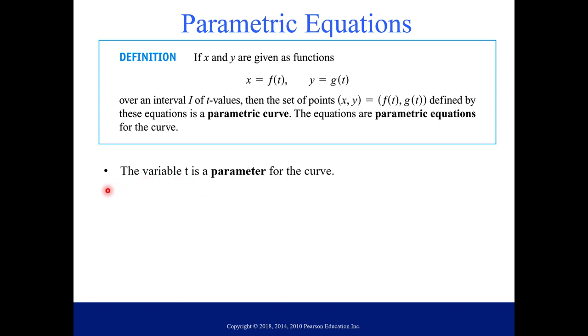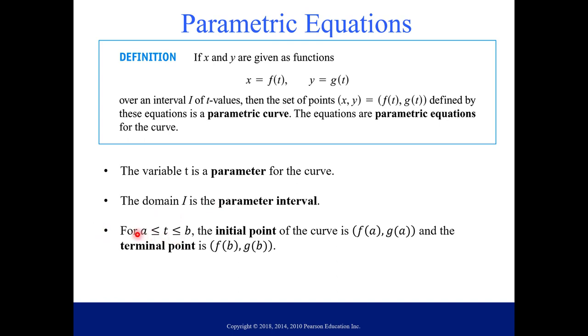Let me give you some details about our definition. First, the variable t is a parameter for the curve. One way you can think about t is time is a possibility for t. The domain i is called the parameter interval. For t between a and b, the initial point on your curve is when you plug in a for t. The terminal point on your curve is when you plug in b for t. Parametric equations and the parameter interval together make up the parameterization for a curve.